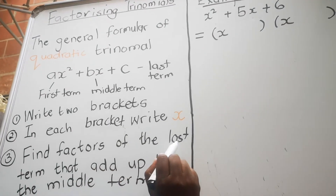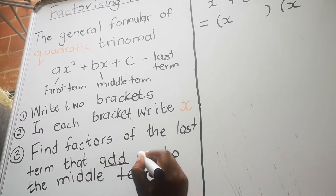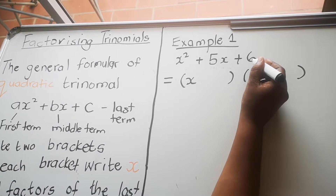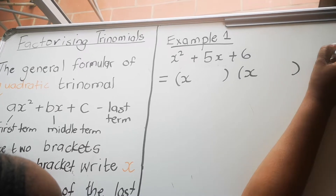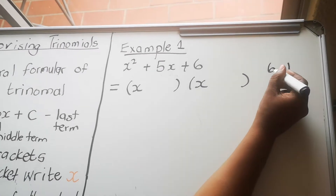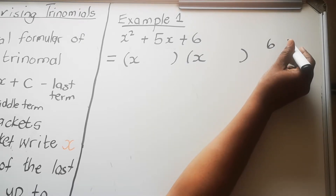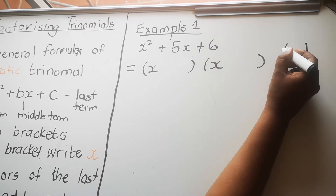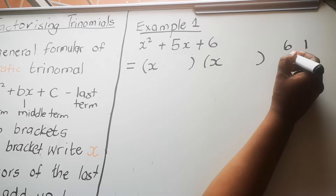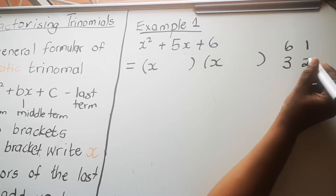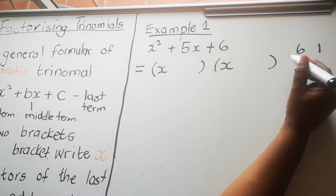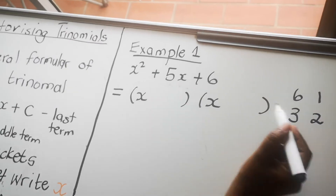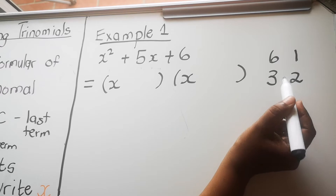Step three: find factors of the last term, 6, that add up to the middle term, 5. The first factor pair is 6 times 1; 6 plus 1 gives 7 — that's not correct. The next factor pair is 3 times 2; 3 plus 2 gives 5, which matches the middle term. So 3 and 2 are the correct factors.